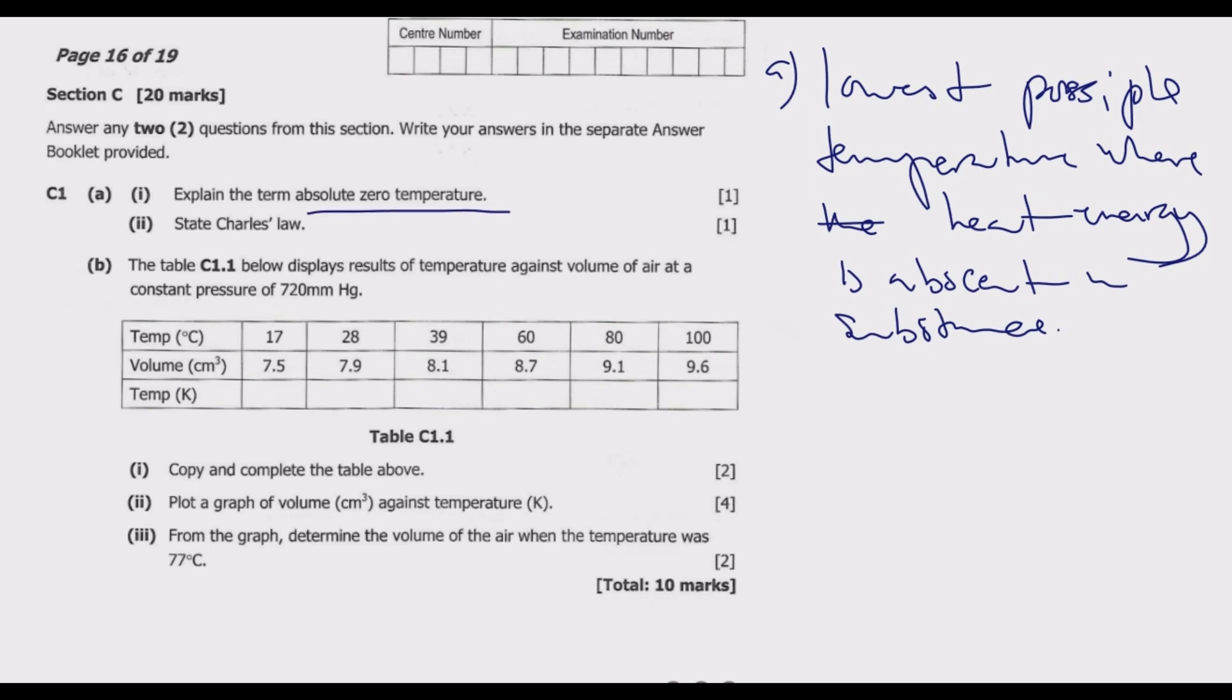This is also known as zero Kelvin temperature. We move to Loma number 2. A state Charles's law. So Charles's law states that volume divided by temperature is equal to a constant at a constant pressure.